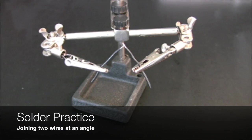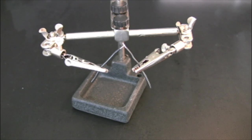In this video, you're going to practice some soldering. Specifically, you're going to practice on two short lengths of wire and learn how to create a robust junction between them at an angle.